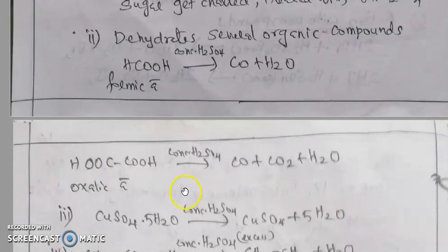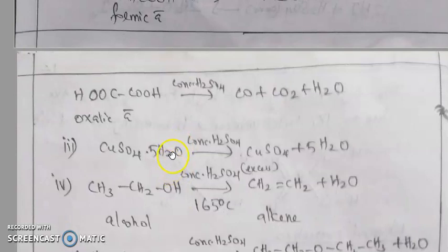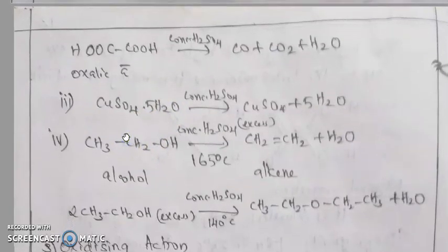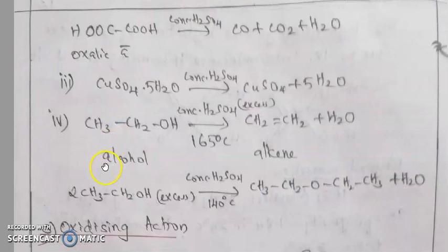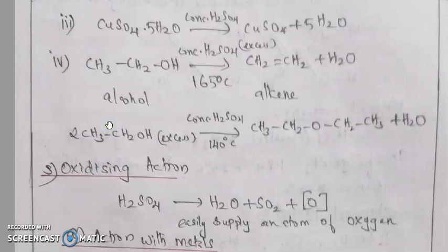Carbon monoxide, carbon dioxide, and water are products — removing water, which is dehydration. Next, copper sulfate pentahydrate (CuSO4·5H2O) reacts with concentrated sulfuric acid to remove water, giving anhydrous copper sulfate. Also, alcohol with concentrated sulfuric acid at 165°C gives an alkene product. With excess concentrated sulfuric acid at 145°C, an ether (alkane) product is formed.